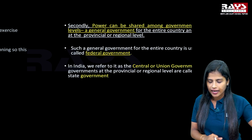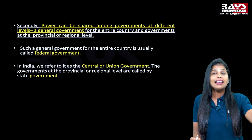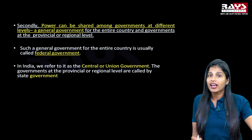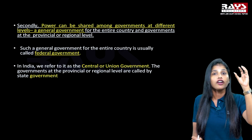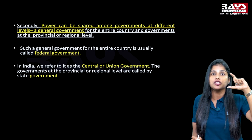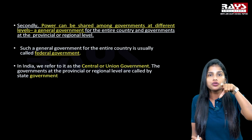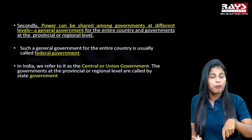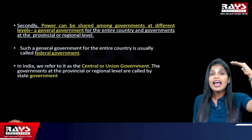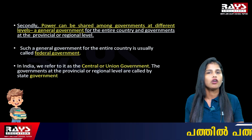Now the second form of power sharing: power can be shared among different levels of government. In the first form, power was shared among different organs of government — the key word there being organs. In the second form, power is shared among different levels of government.